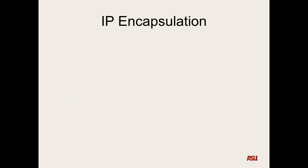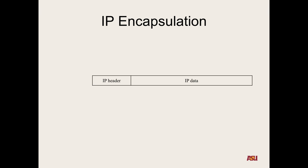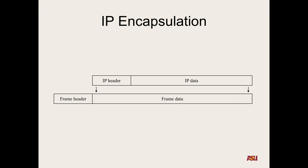So IP — what's below IP? The link layer. The IP packet is actually encapsulated — so the IP header and the IP data are all encapsulated in the link layer frame, and that's the payload of the link layer frame, which has some header before it that specifies all of its options.